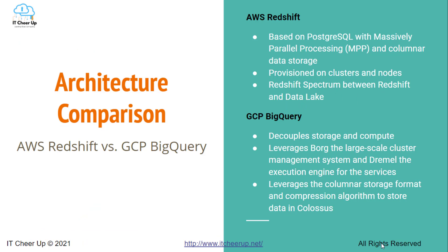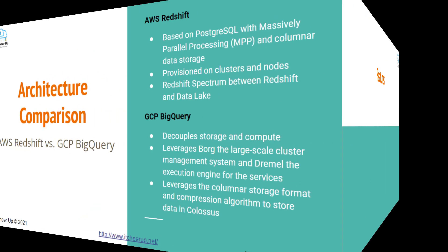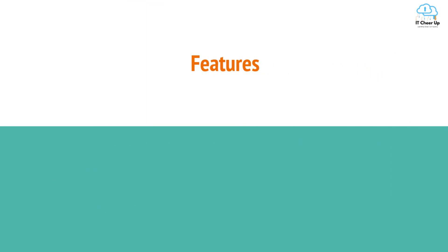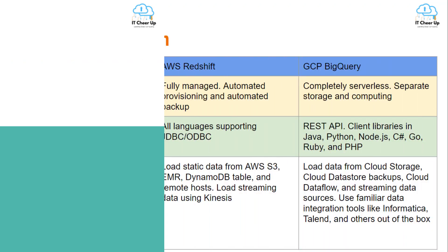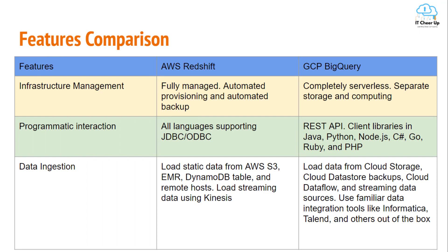Here is the summary of the architecture comparison. AWS Redshift and GCP BigQuery are both platform-as-a-service offerings in the cloud. Let's compare their features. On infrastructure management: AWS Redshift is fully managed with automated provisioning and automated backup, while GCP BigQuery is completely serverless and separates storage and computing.